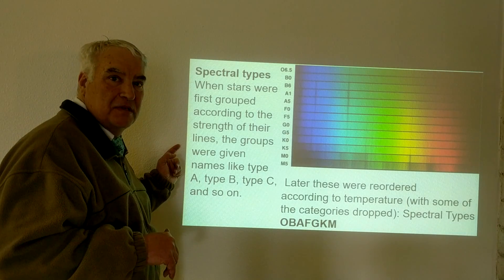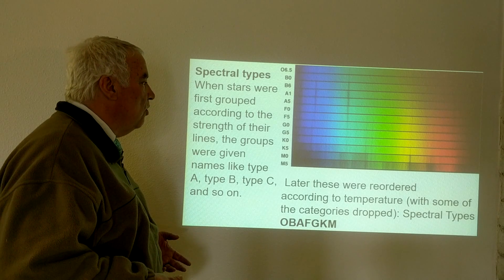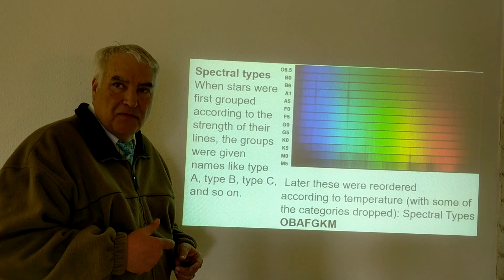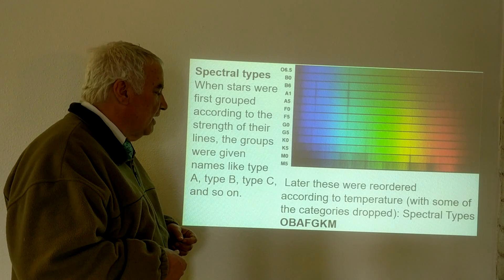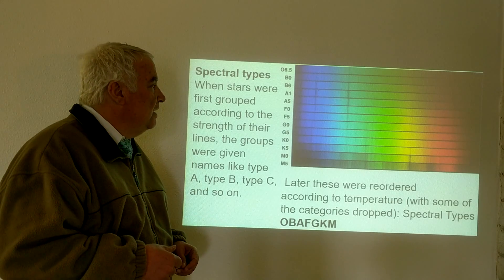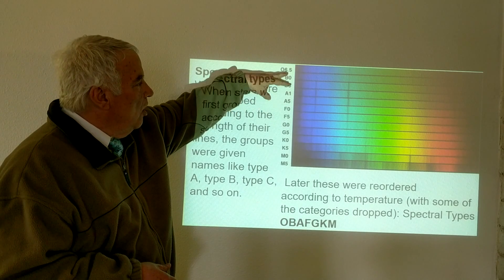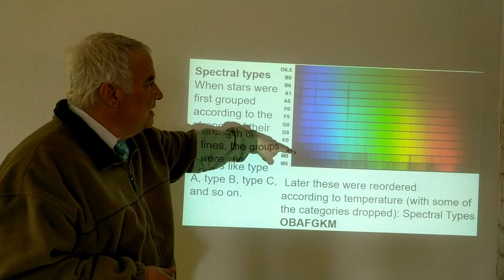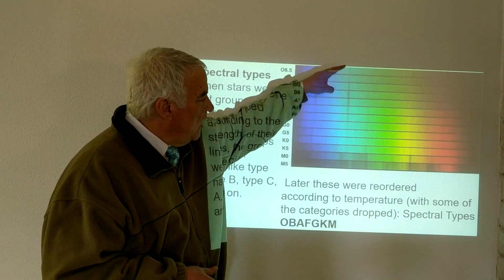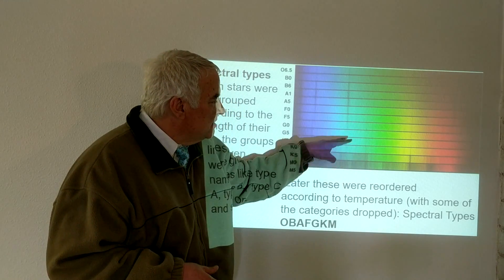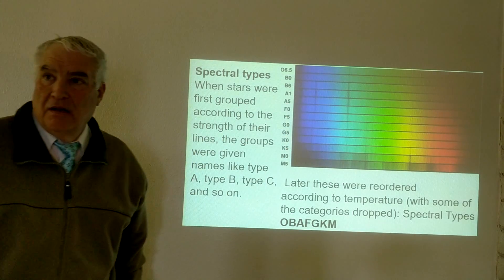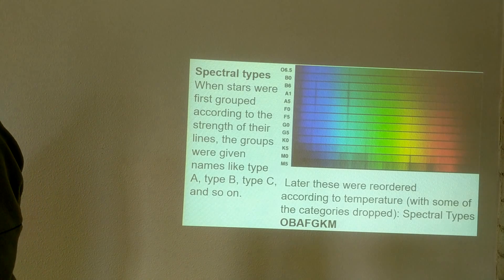They came up with a system we now call spectral types. When stars were first grouped according to the strength of their lines, the groups were given names like A, B, C, and so on. It was soon determined that this related to the temperature of the stars, so the letters had to be reorganized. Those letters are O, B, A, F, G, K, M. The hottest stars are O and B; cooler ones are A, F, and G; and K and M are the coolest, showing a gradual transition based on line strengths.